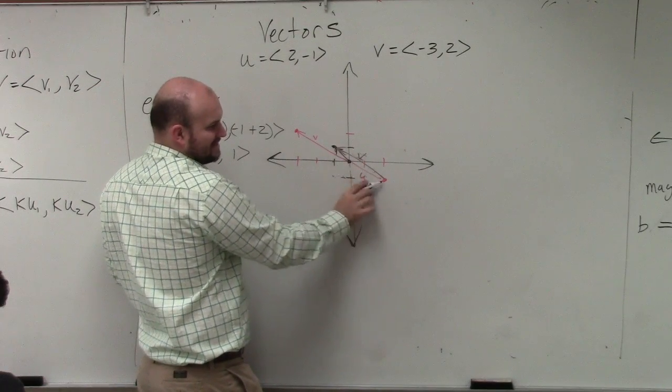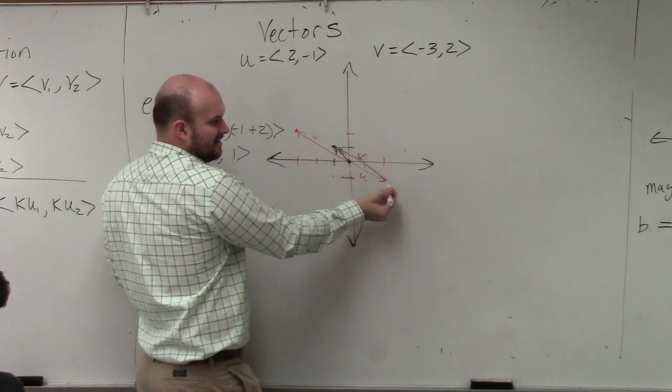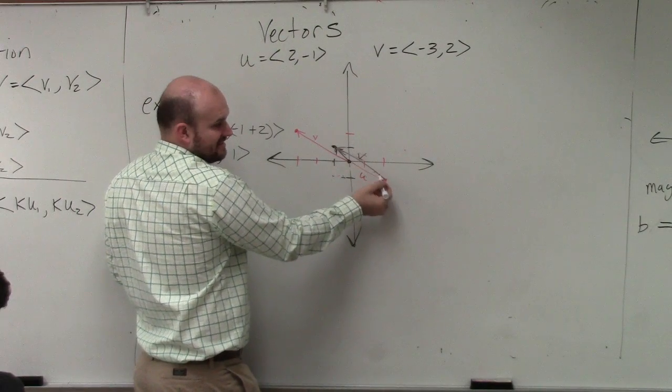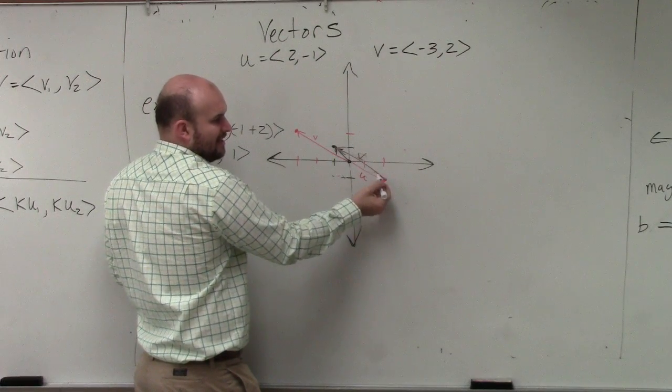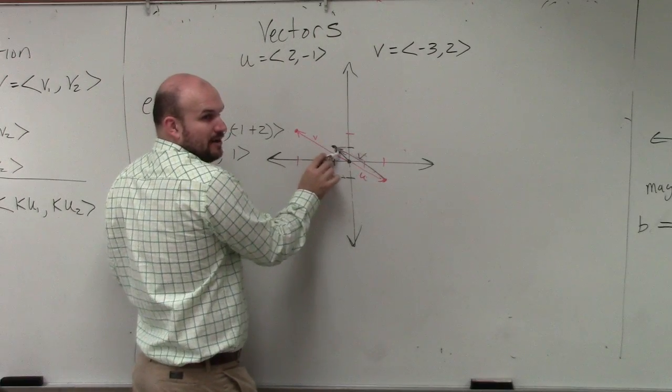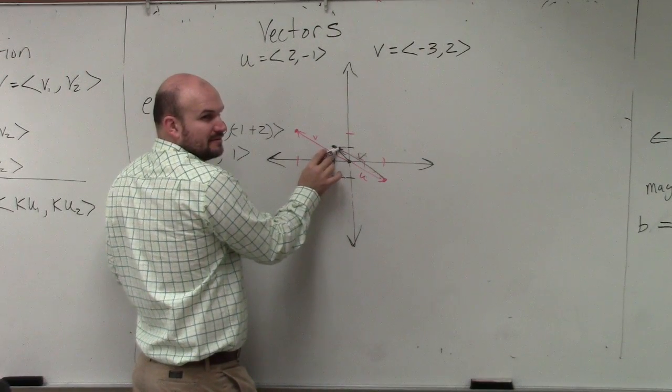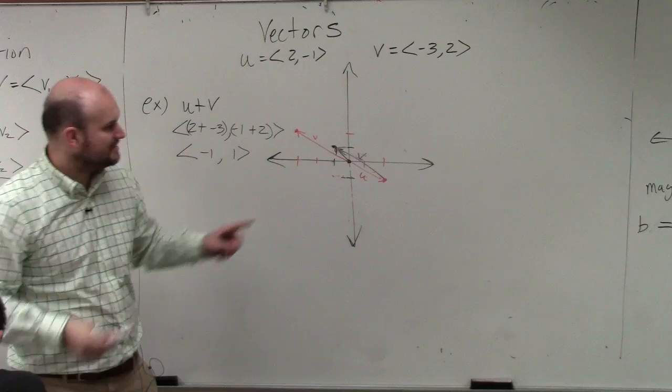See how when I put v, when I put the tail of v at the head of u and add it to there, it takes me back to my same one. Does everybody see that? So it's what we just call our tail-to-head addition.